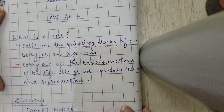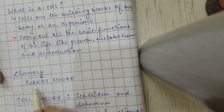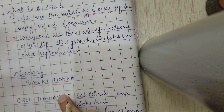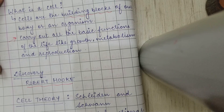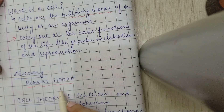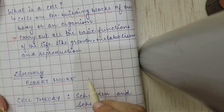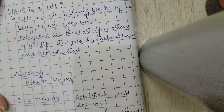Now, who discovered the cell? Cells were discovered by Robert Hooke. Robert Hooke noticed the cells of cork under a microscope, because cells are very minute and cannot be seen with the naked eye. Later on, a detailed structure of the cell and the functions of its various parts were discovered when the electron microscope was invented.